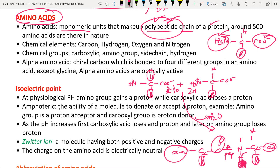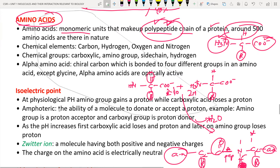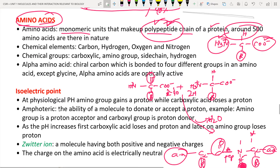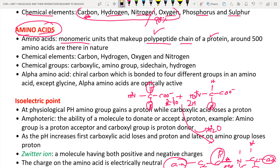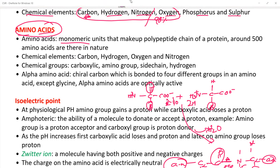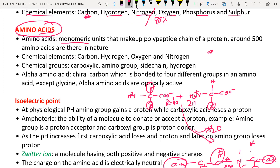Around 500 amino acids are present in nature, but out of these 500, only 20 amino acids are found in living organisms. Why only 20? Because the genetic code codes for only 20 amino acids. Due to the genetic code, only 20 amino acids are present in proteins or in biological systems.